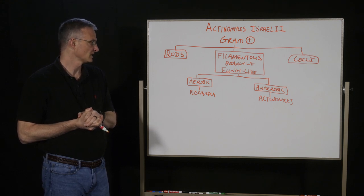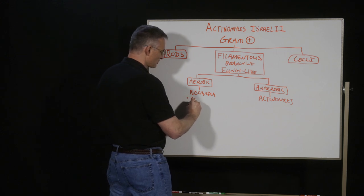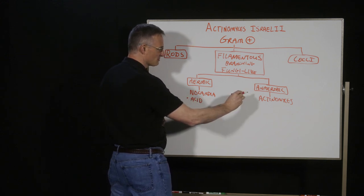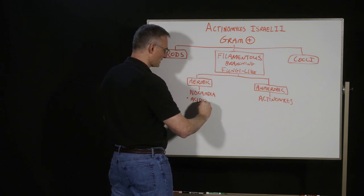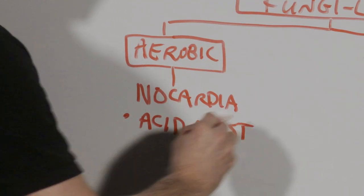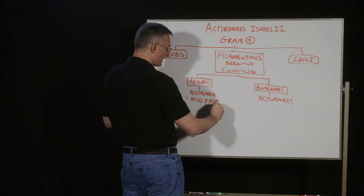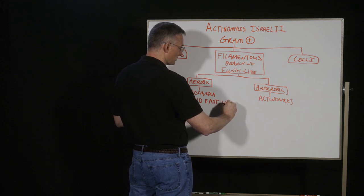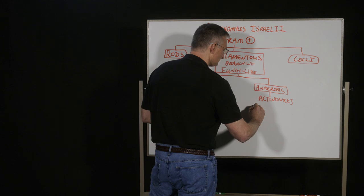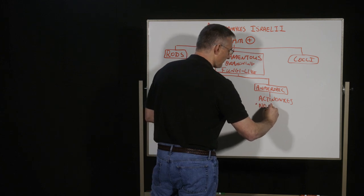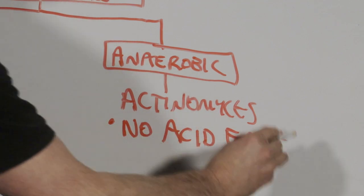So we're going to take this another couple steps. So one of the things that differentiates nocardia from actinomyces, if they didn't happen to tell you whether it's aerobic or anaerobic, is whether there is an acid-fast response. So nocardia will be acid-fast. Now it says weak, weak normally, but acid-fast is acid-fast. As opposed to actinomyces, which is not acid-fast.